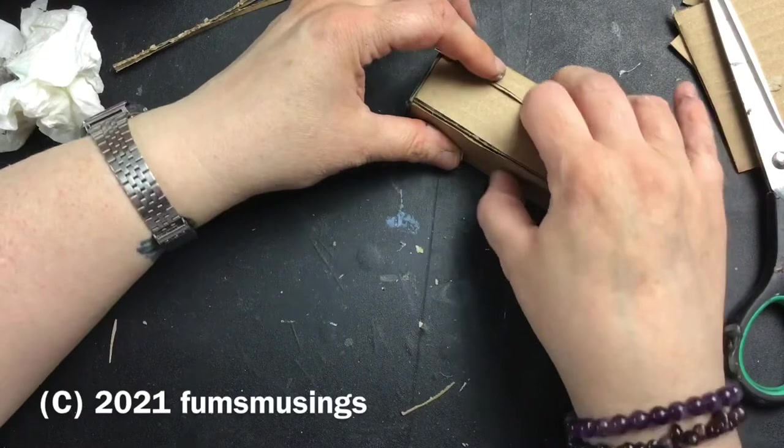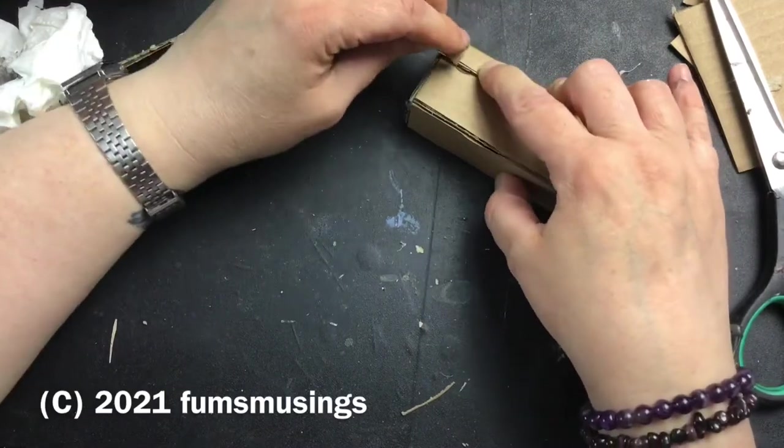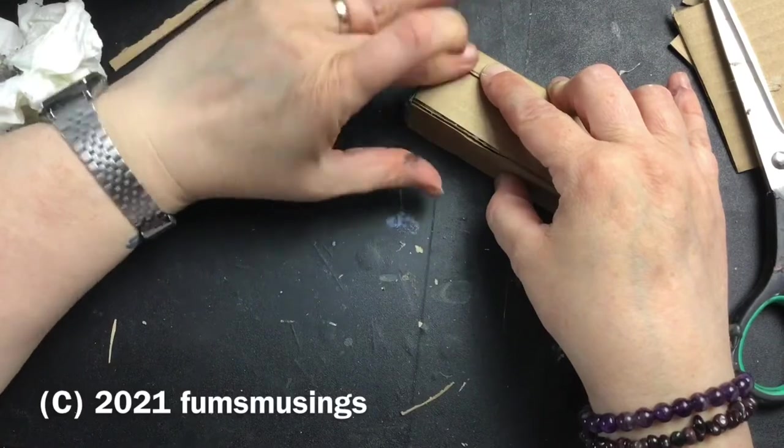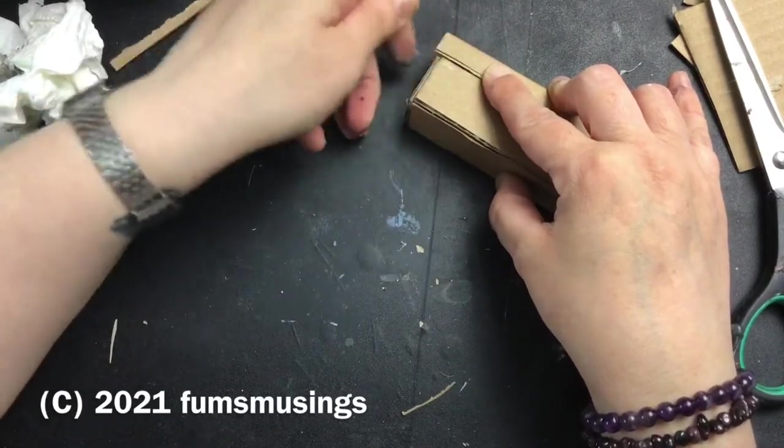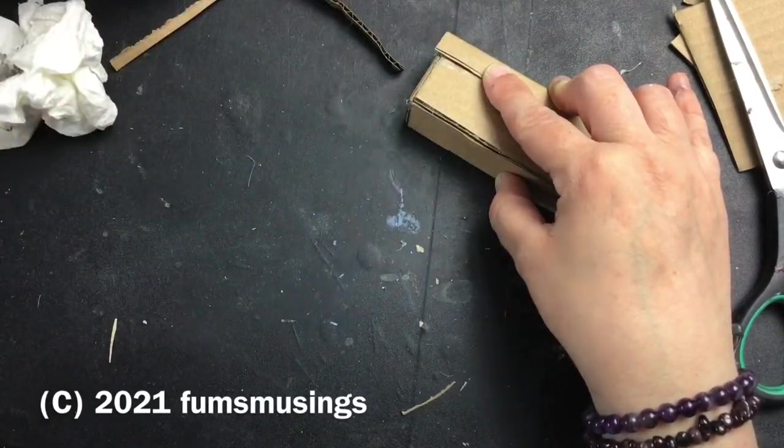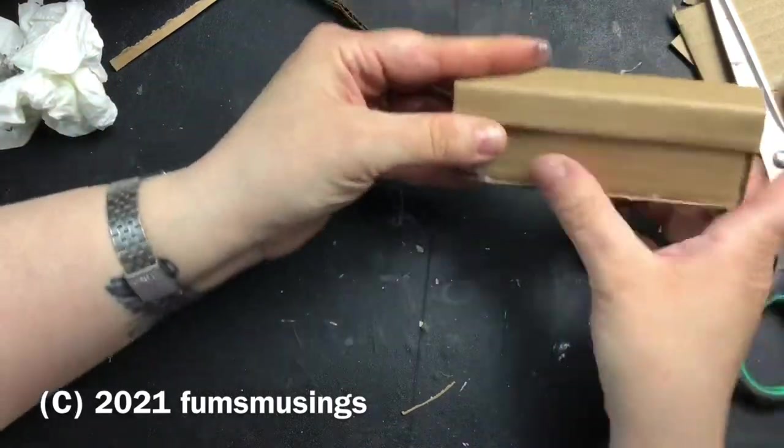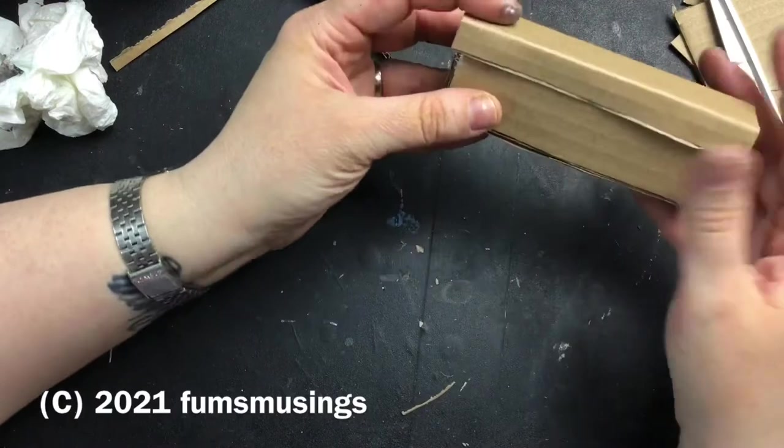And I'm going to do the exact same thing where I get a little piece of card to fill in the gap on either side of this lid and then just trim it to shape. And try not to get any big blobs of glue or anything because that will just show up when you paint afterwards.